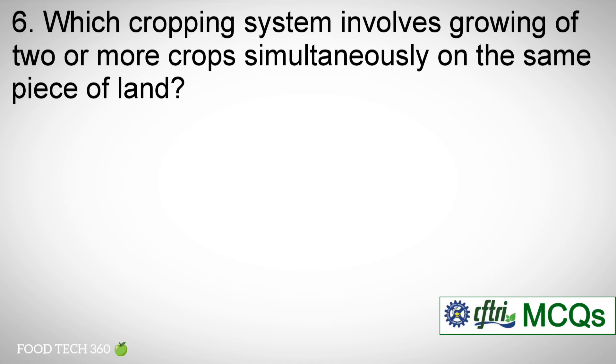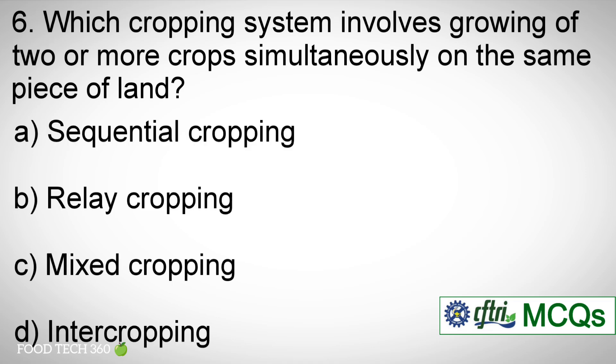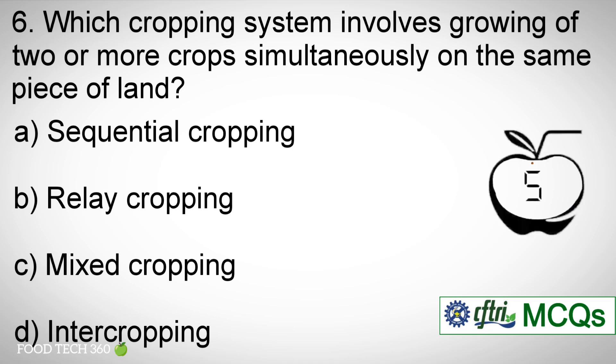Question number six: Which cropping system involves growing of two or more crops simultaneously on the same piece of land? Options: a) Sequential cropping. b) Relay cropping. c) Mixed cropping. d) Inter cropping. Correct answer: c) Mixed cropping.